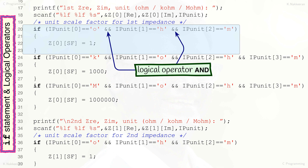In line 20, the checking condition results in true only if IP_unit[0] equals 'O' AND IP_unit[1] equals 'H' AND IP_unit[2] equals 'M'. If true, line 22 assignment statement is included in execution. If false, line 22 is skipped and execution continues to the rest of the program.